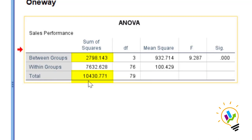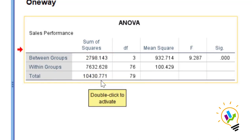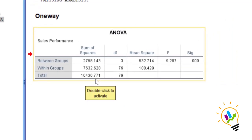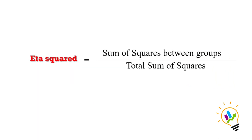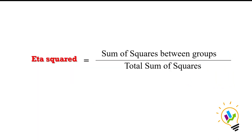The sum of squares between groups value is 2798.143, and the sum of squares total is 10430.771. The formula for calculating effect size is: eta squared = sum of squares between groups divided by total sum of squares.